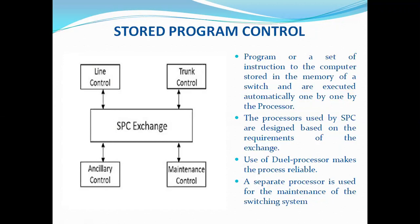Basically it is having four types of units. Line control unit — it will control the subscriber line interfaces of any exchange. Then trunk control unit — trunk is basically the connection between one exchange to another exchange.